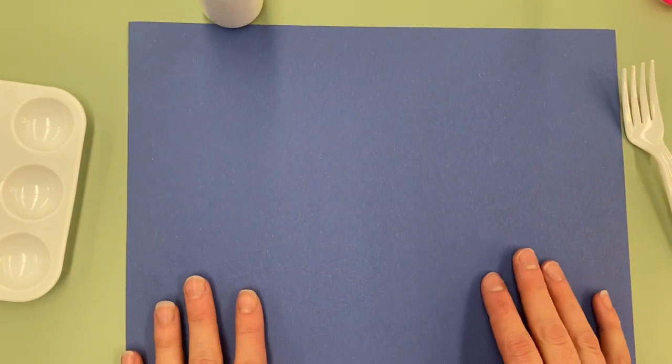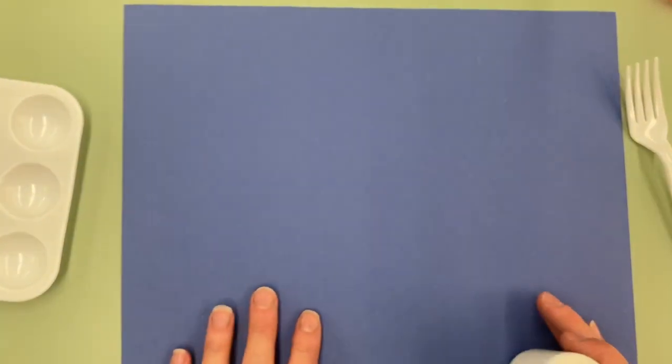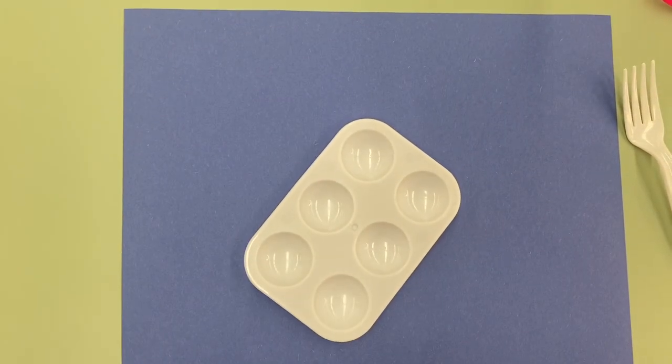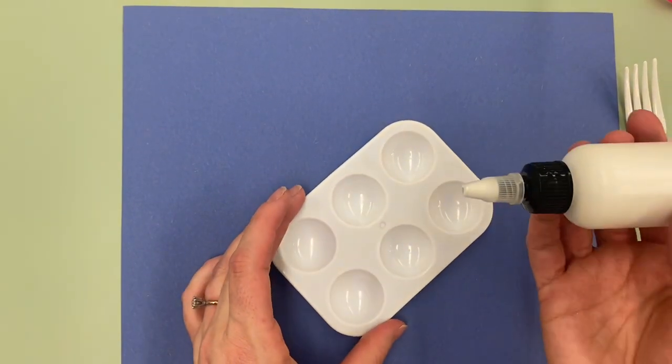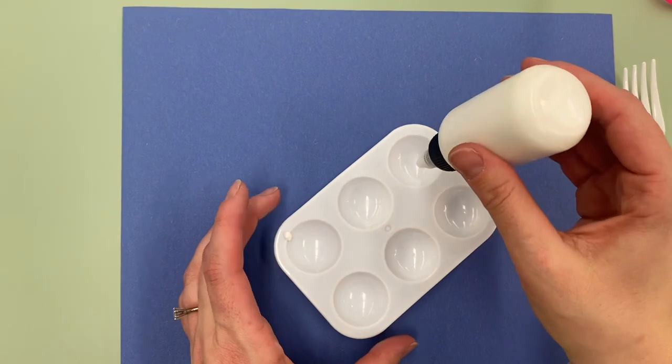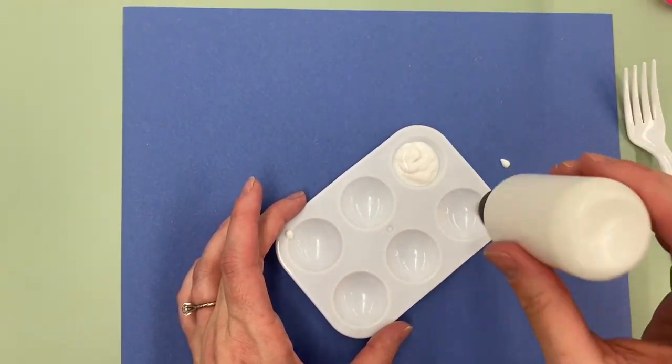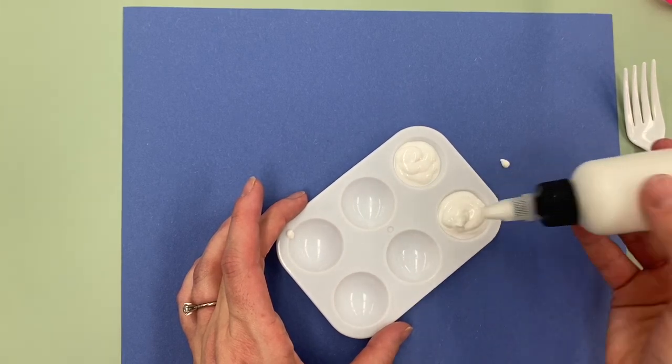So we're gonna use our large piece of blue construction paper, dark blue construction paper, and in our paint palette we're gonna squirt out some white paint using our little squirt bottle here. Uh-oh, I flung some on my paper. That's okay. We're just gonna squirt it out like this.